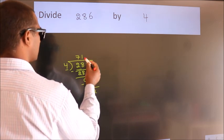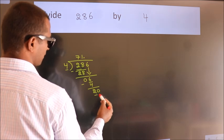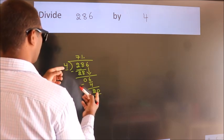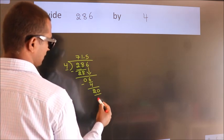So what we do is we put a dot, take 0. So 20. When do we get 20 in the 4 table? 4 fives are 20.